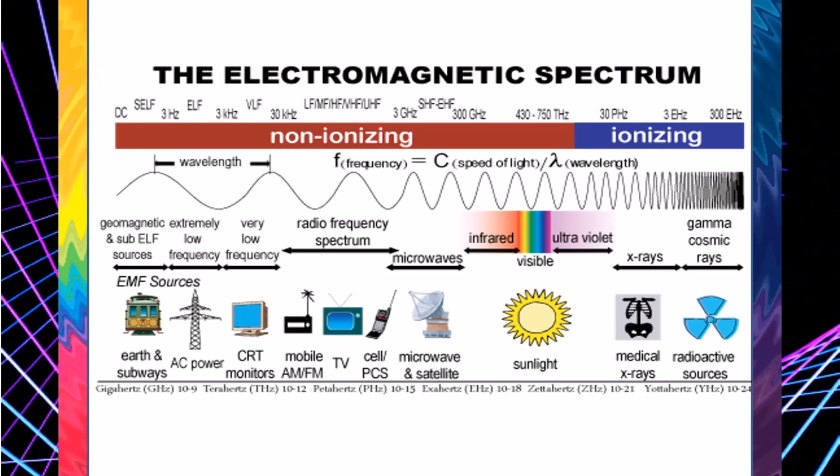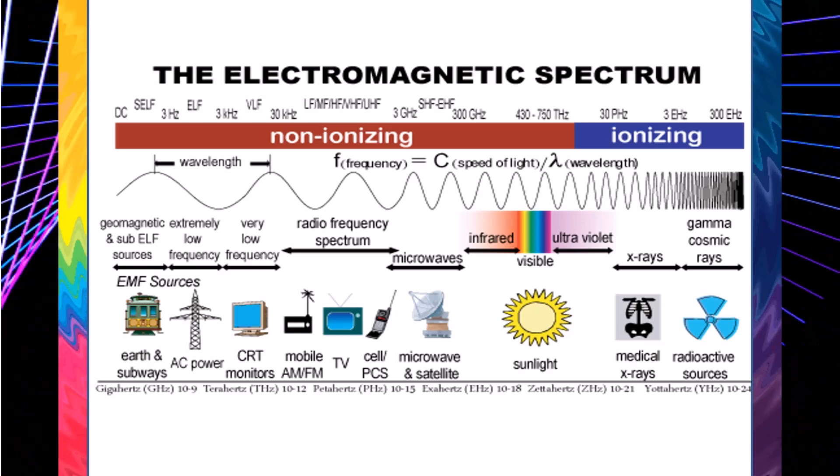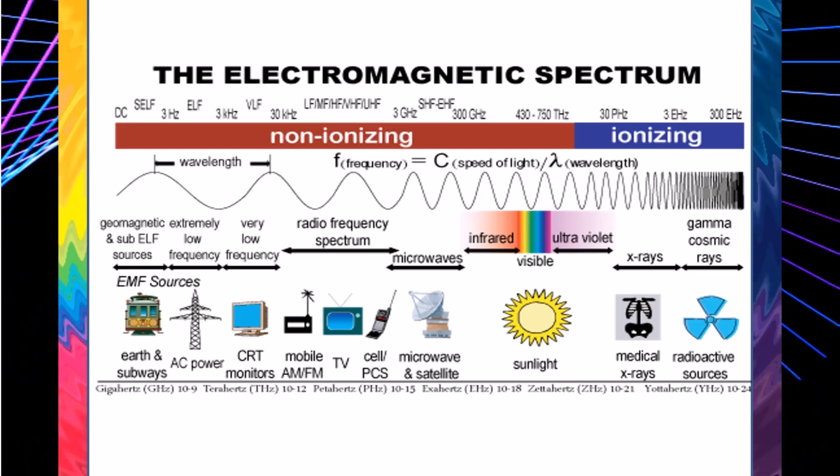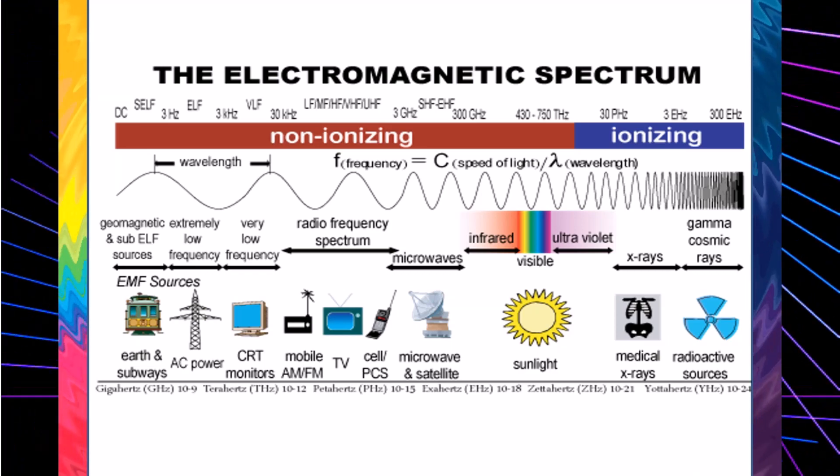All electromagnetic waves move at the speed of light. Examples of electromagnetic waves include radio waves, microwaves, infrared, visible light, ultraviolet, X-rays, and gamma rays.